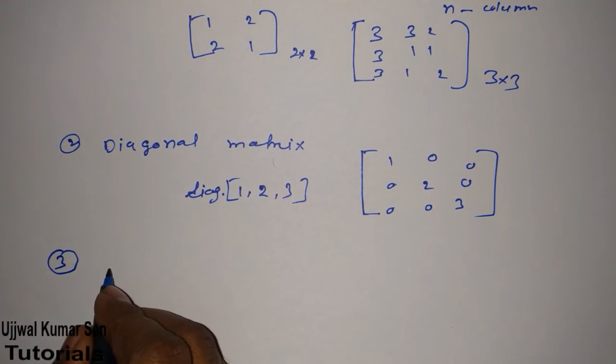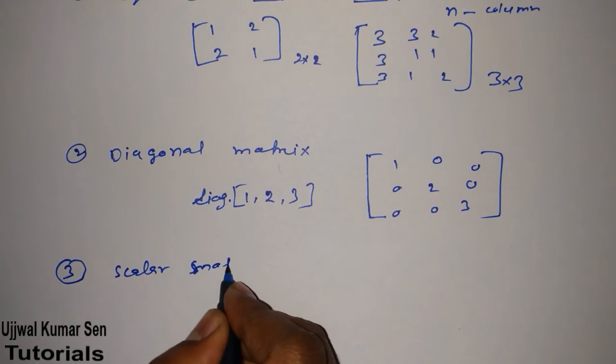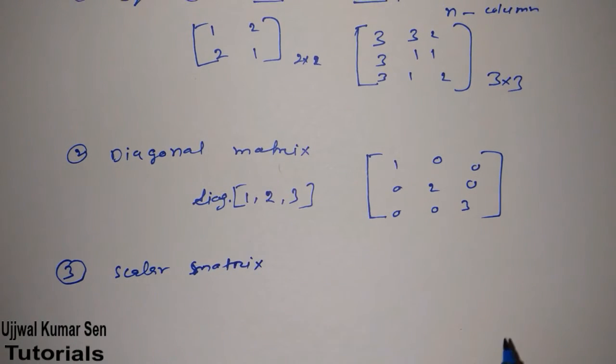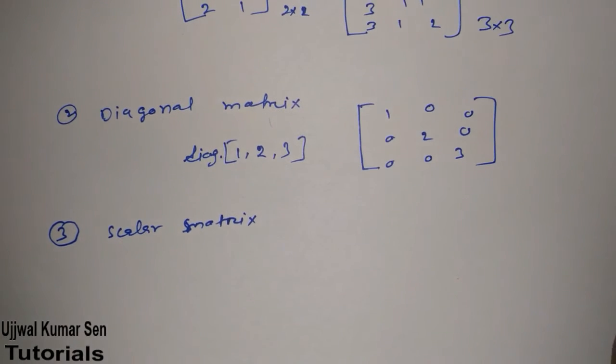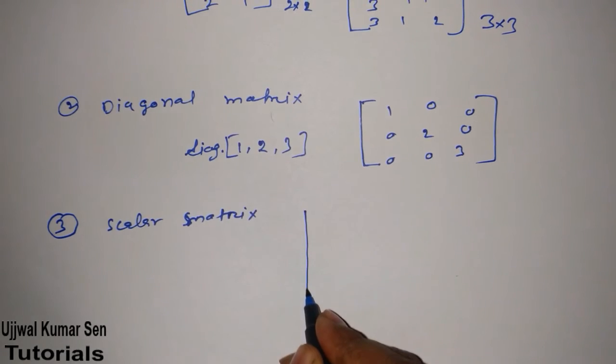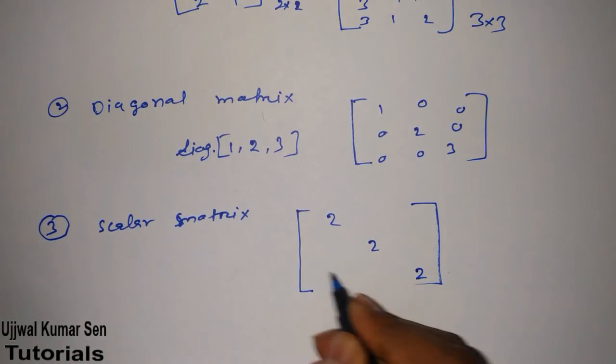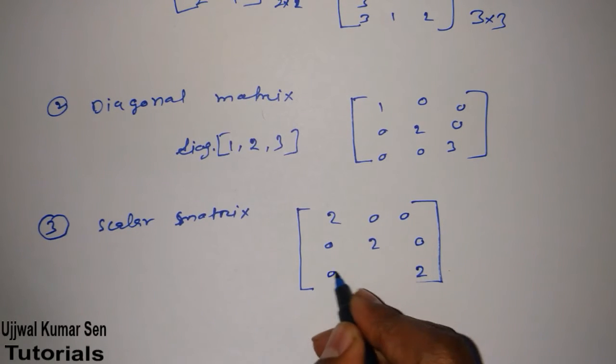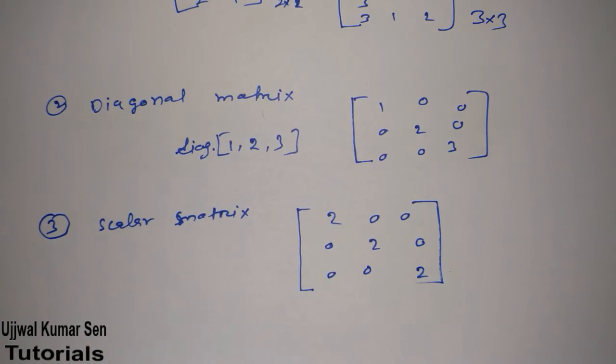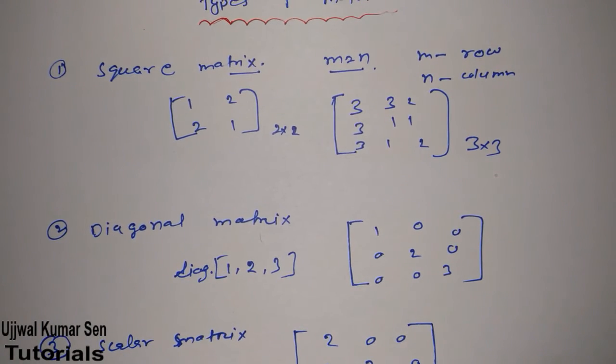Now we'll move to the third matrix that is known as scalar matrix. What is scalar matrix basically? If all its diagonal elements are of same value, just like 2 2 2, and this is known as scalar matrix. So this is the third example of types of matrices.